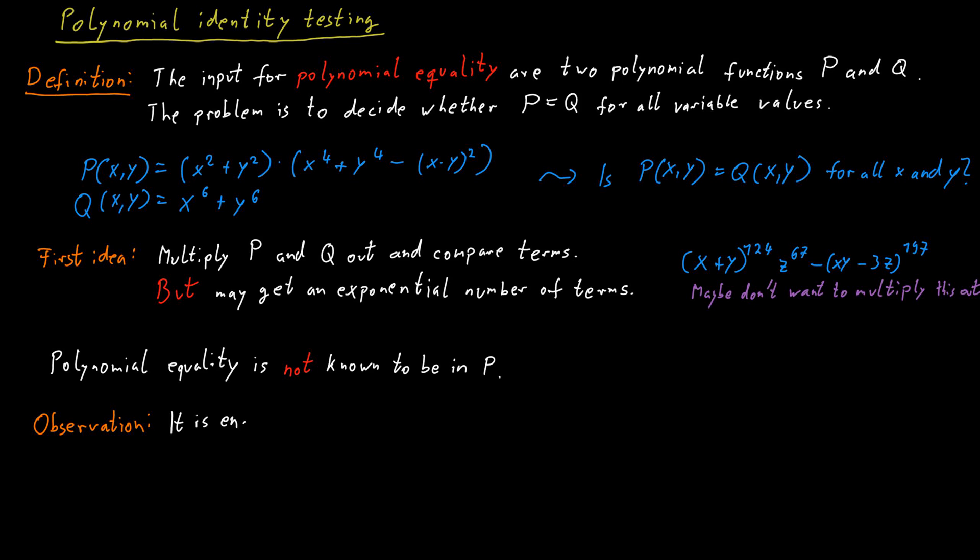Polynomial identity testing is really the same as polynomial equality because if I want to find out whether two polynomials are the same, what I can do is I can simply subtract them from one another and check whether the result is equal to 0 or not.